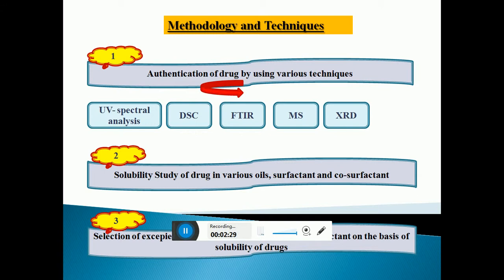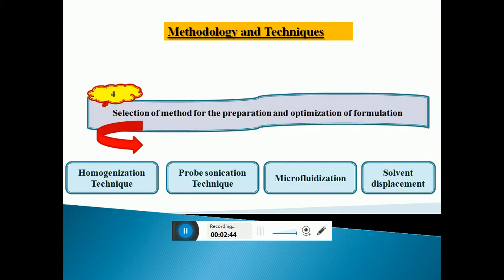The next step is solubility study of drugs in various oils, surfactants, and co-surfactants. Following that, the selection of excipients such as surfactant, oils, and co-surfactant is made on the basis of the solubility of the selected drugs in these excipients.